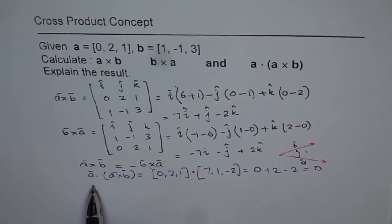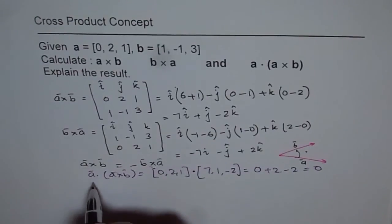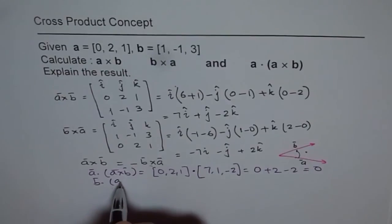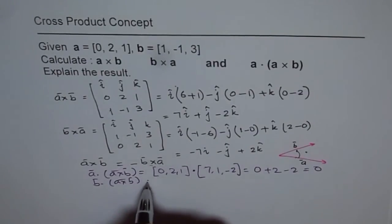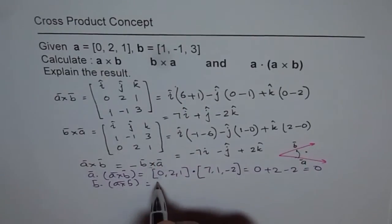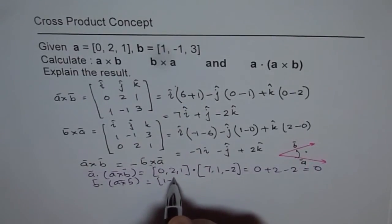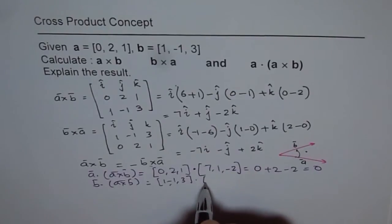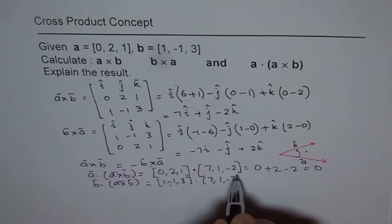Similarly, if you do dot product of B with B cross A or even A cross B, it does not really matter. Even then, if you do B dot A cross B, that is vector B is 1, -1 and 3 dot 7, 1, -2.